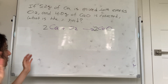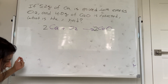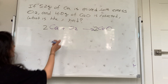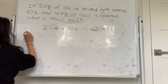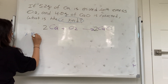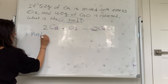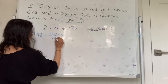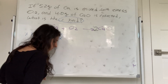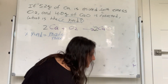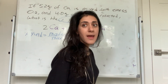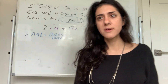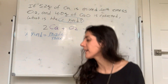Every time I see percent yield, I say made over max. Because I'm asking for percent yield, both the made and the max have to be given. When you read this, calcium oxide is my product, and it says 4.0 grams is collected. So my made is 4.0 grams of calcium oxide.